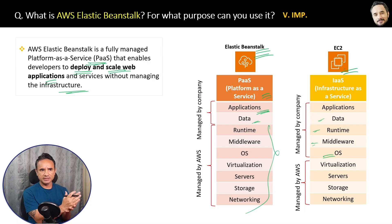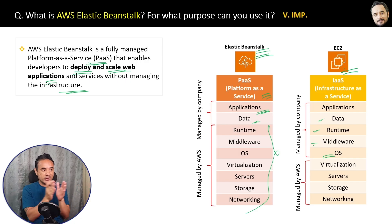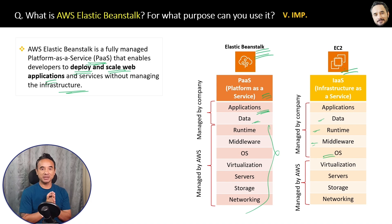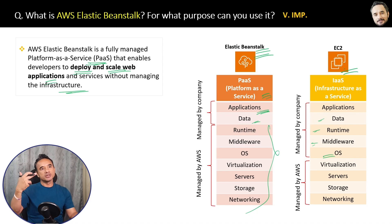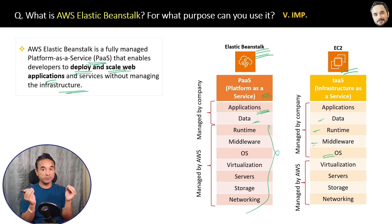Here is the simple and easy-to-remember definition: AWS Elastic Beanstalk is a fully managed Platform as a Service that enables developers to deploy and scale web applications and services without managing the infrastructure. Whether you are building a web app, a REST API, or a mobile backend, you can use Elastic Beanstalk. You may ask why we still have EC2 if Beanstalk is simpler — that I will explain in an upcoming question.